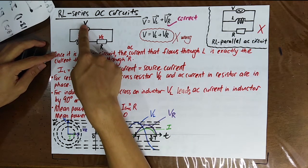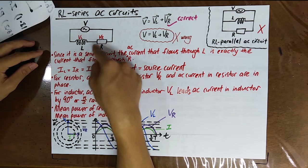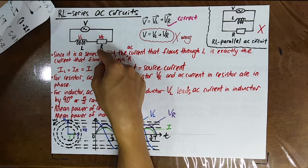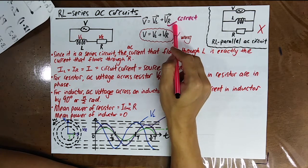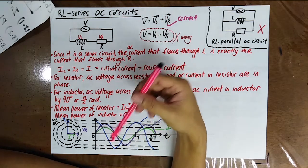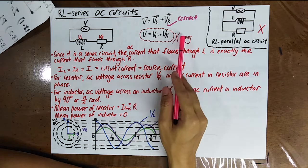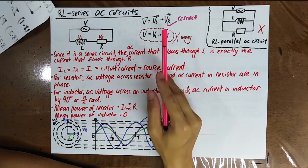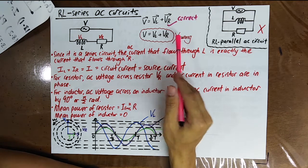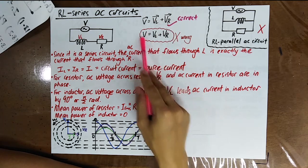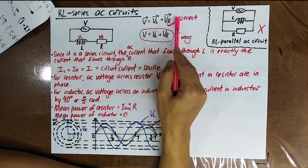For the RL series alternating current circuit, V is the voltage of the supply, VL is the voltage across the inductor, VR is the voltage across the resistor. V arrow equals VL arrow plus VR arrow is correct because they are vector quantities with different phase angles. Writing V = VL + VR without arrows is wrong because VL and VR are not in phase — VL leads VR by 90 degrees.